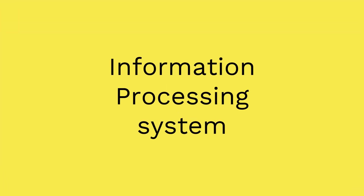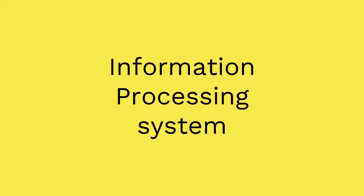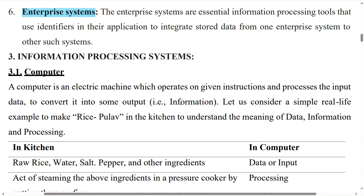An information processing system includes a computer. A computer is an electronic machine which operates on given instructions and processes the input data to convert it into some output, that is information. Let us consider a simple real-life example — making rice pulao in the kitchen — to understand the concepts of data, information, and processes.